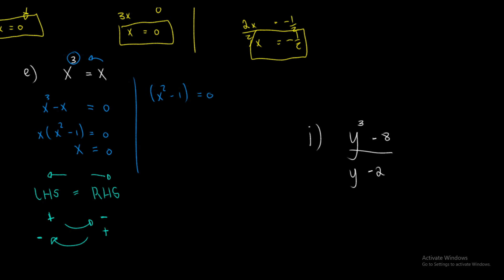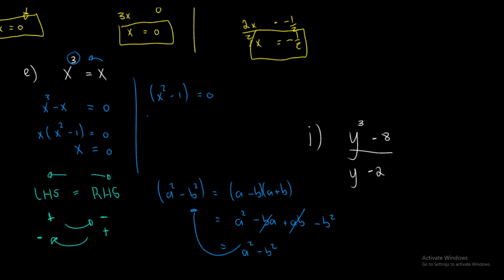Here I can use something known as difference of squares. If I have A squared minus B squared, I can write it as (A minus B)(A plus B). If we expand, we get A squared minus BA plus AB minus B squared. BA and AB are the same thing, so those two cancel, leaving A squared minus B squared — the exact same thing. A key multiplication principle: the order of multiplication simply does not matter.